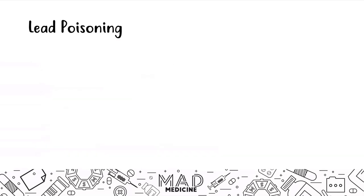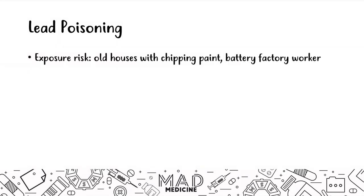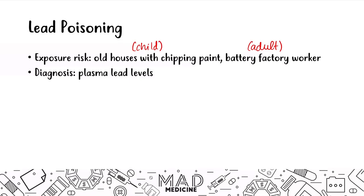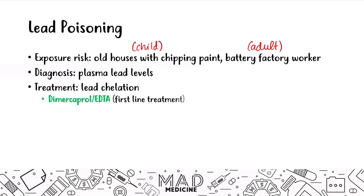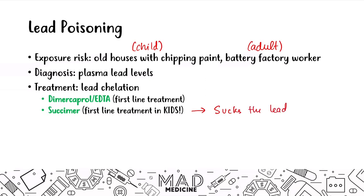Exposure to lead poisoning comes from old houses with chipping paint for children, and battery factory work for adults. Both groups are at higher risk, and you can diagnose this by checking plasma lead levels. To treat this condition, you want to chelate lead. The first-line treatment is lead chelation with dimercaprol plus EDTA. In children specifically, the first-line treatment is succimer — a less toxic analog of dimercaprol — which is better for use in kids.